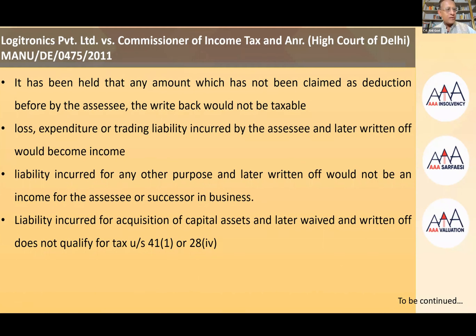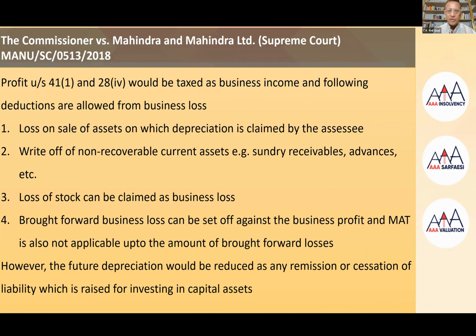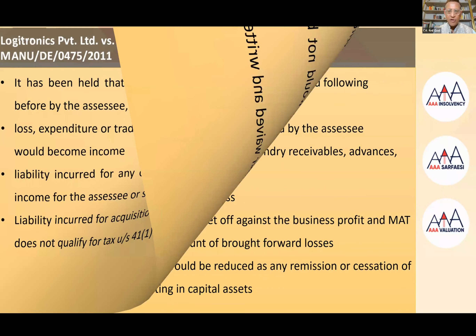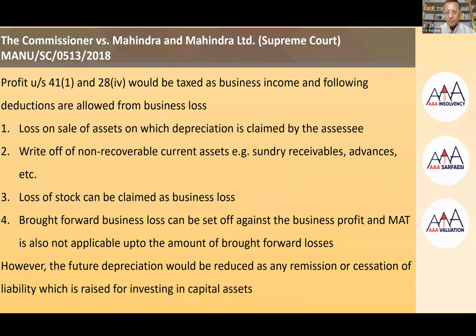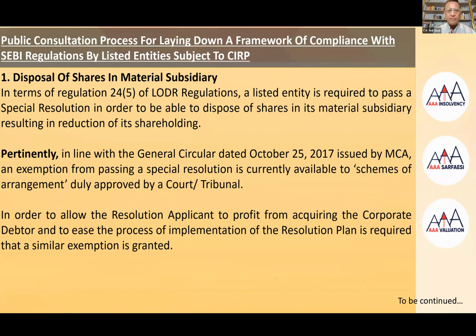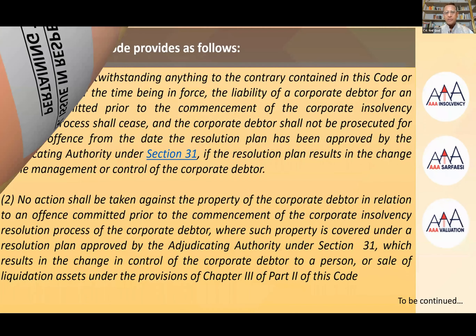The key difficulties presently faced by most resolution applicants relate to the Rainbow Paper Mill judgment, which has changed some scenarios. We are awaiting the amendment expected in the monsoon session of Parliament. The judgment in Logitronics Private Limited versus Commissioner of Income Tax (2011) and Commissioner versus Mahindra and Mahindra Limited — a Supreme Court judgment — both support what we have said on Sections 41 and 28(4). SEBI-related issues will be covered in a separate dedicated webinar.